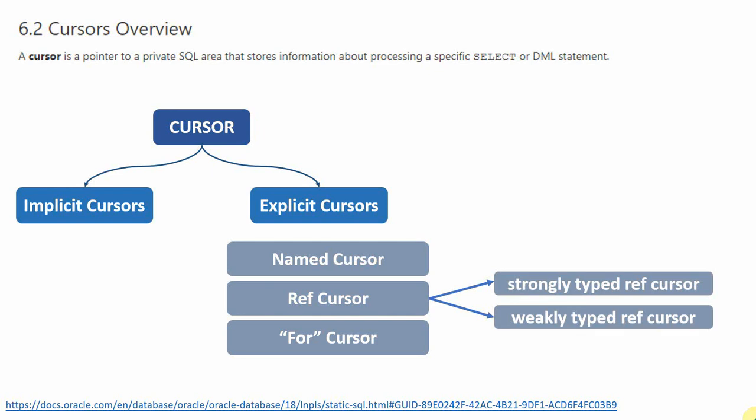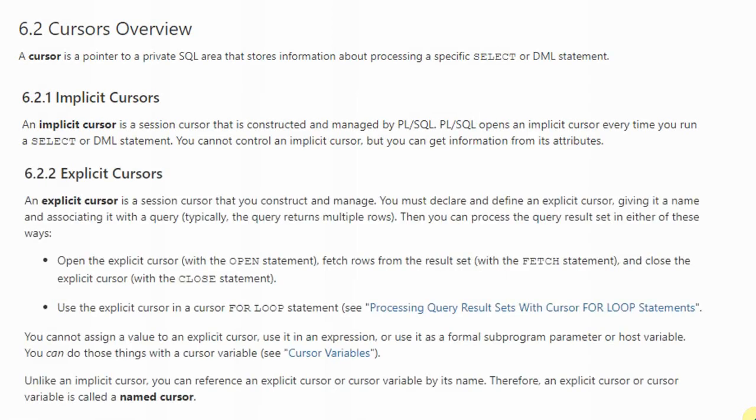In this video we will see about how to use an explicit cursor. As mentioned, the explicit cursor is fully managed by the developer — he can declare it, open it, fetch the information from the cursor, and close the cursor. To use the explicit cursor a developer has to follow four steps, and you have to follow those four steps exactly in the same order.